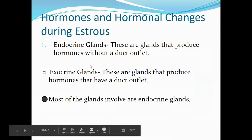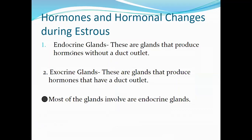Hormones and hormonal changes during the estrus cycle involve the endocrine glands. Endocrine glands produce hormones without a duct outlet. The exocrine glands are another group that produce hormones via a duct outlet. Most of the glands involved in the estrus cycle are called endocrine.